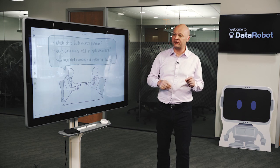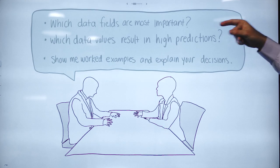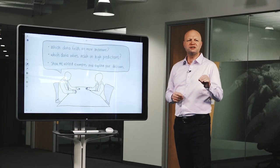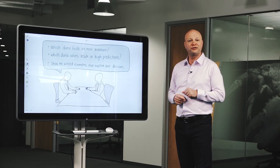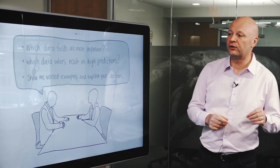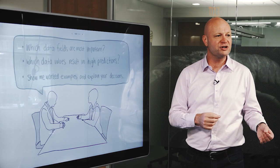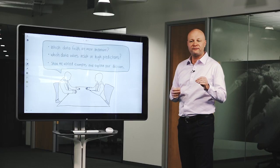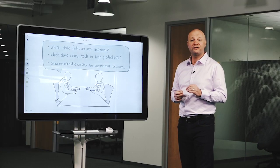The first question is, which data fields are most important? Which pieces of information are the ones that you use to make the decision? The second question, which data values result in high predictions or low predictions? Tell me the patterns you have found and how they relate to the answers you make.